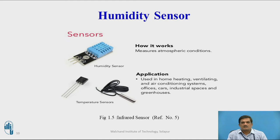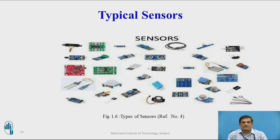Humidity sensors are a popular type of sensor used in home heating, ventilating, and air conditioning systems, offices, cars, industrial spaces, greenhouses, smart houses, and smart cities. These typical sensors exist with different sizes, different configurations, different hardware and associates. They are designed based on the application, and their cost depends upon their configurations, peripherals, and real-time applications.